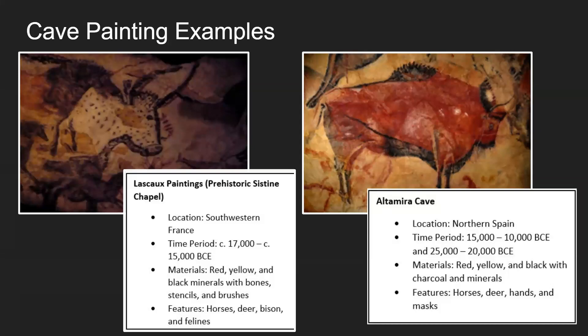Another example is the Altamira cave, located in northern Spain. The time period is also around 15,000 to 10,000 BCE and a little further back. Materials: they again used red, yellow, and black with charcoal and minerals. Features most commonly include horses, deer, hands, and masks. Masks are important because they're used in cultural and spiritual things such as celebrations and worship of their deities.